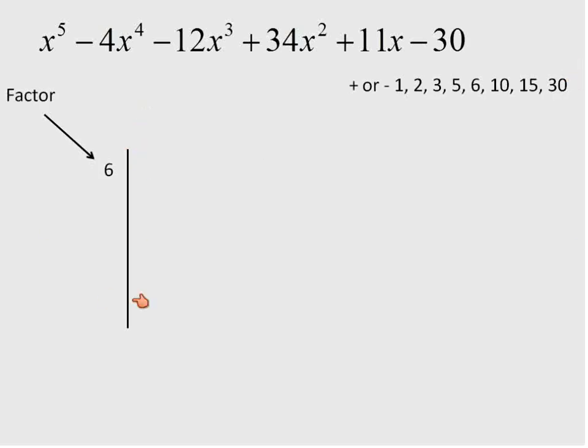Next, we're going to draw a line. You want to pick one of those factors, usually something around the middle, and you'll see why in just a minute. In this case, I picked 6. So we put the factor over here on the left side of the line.